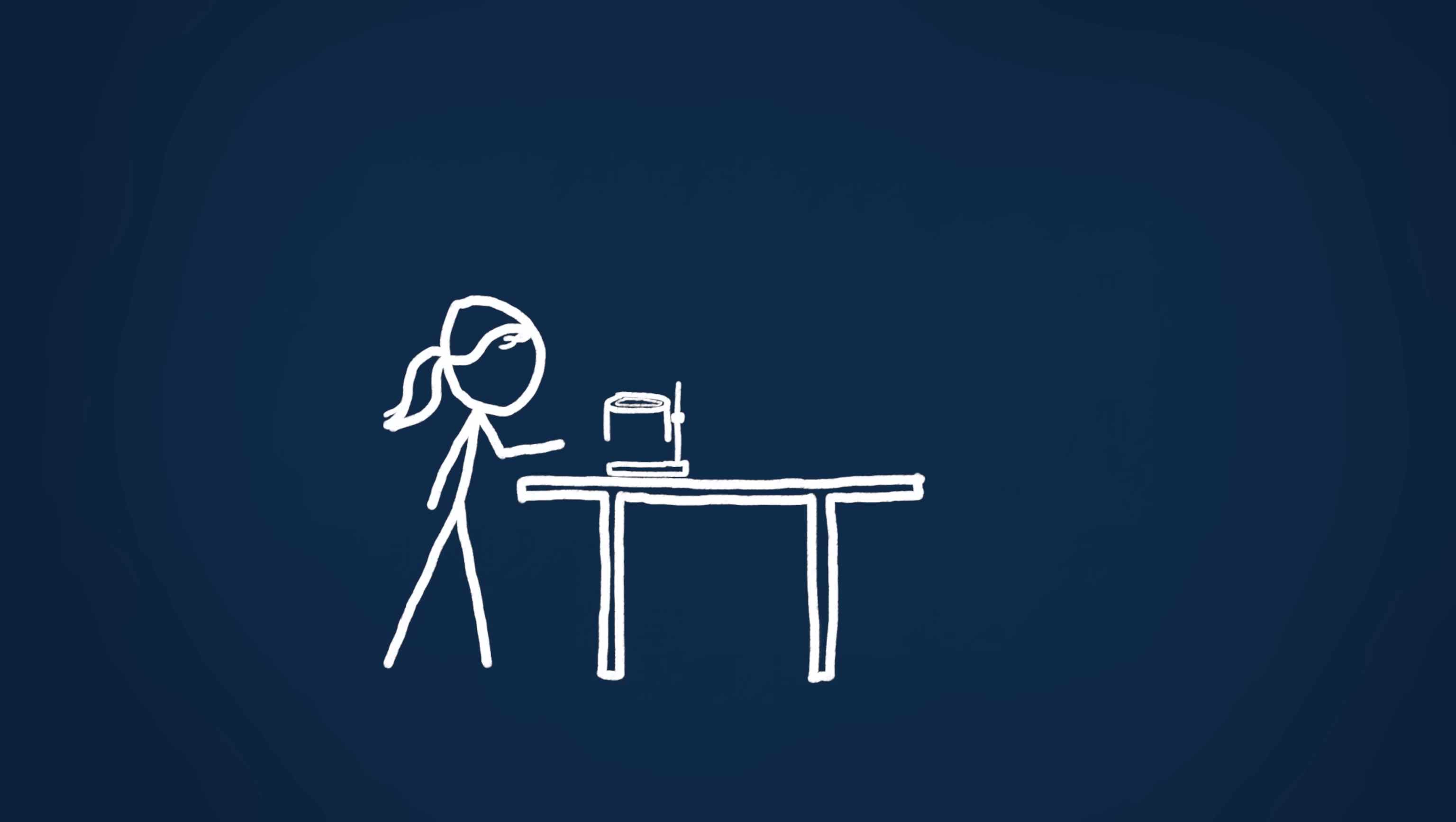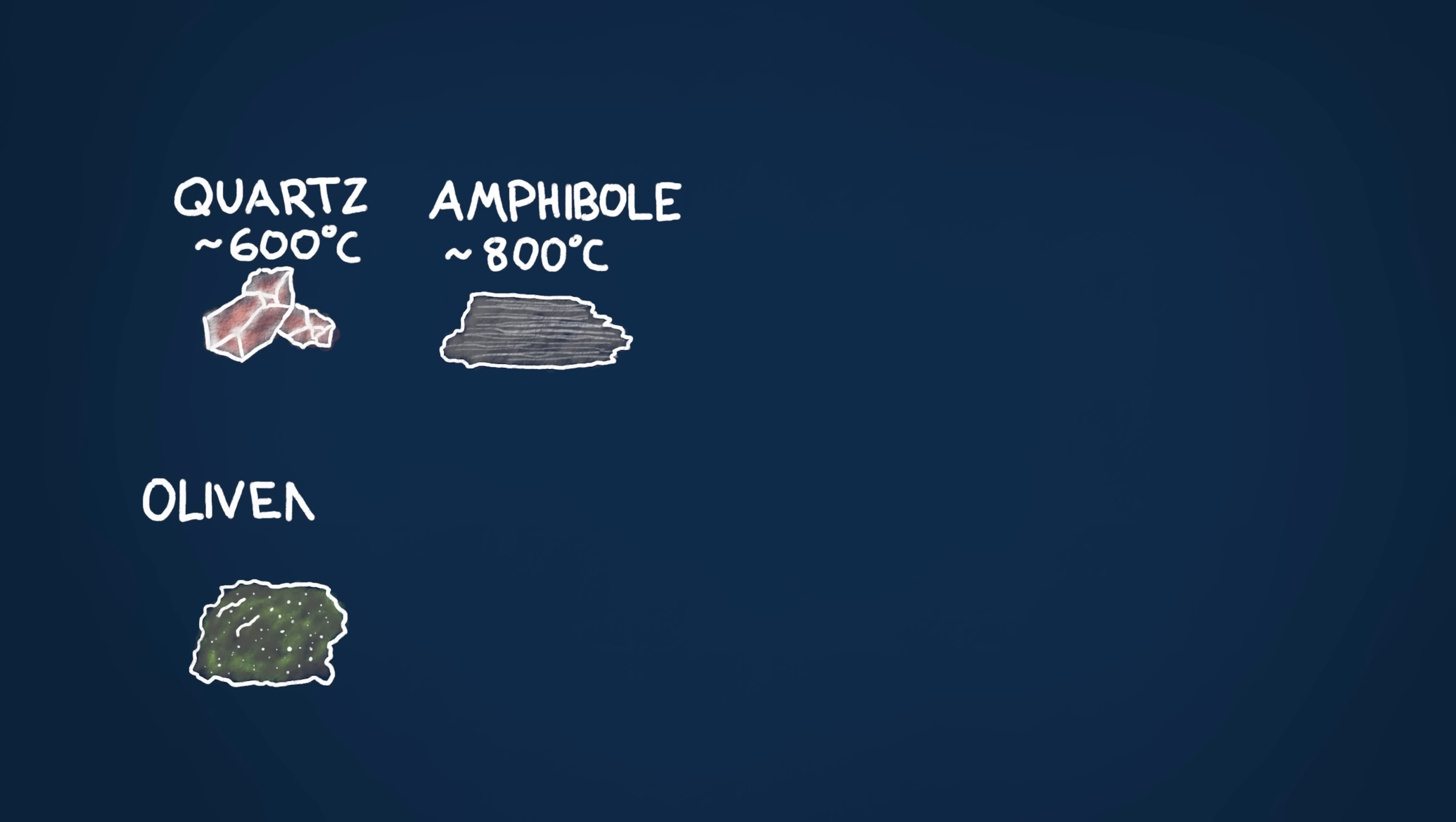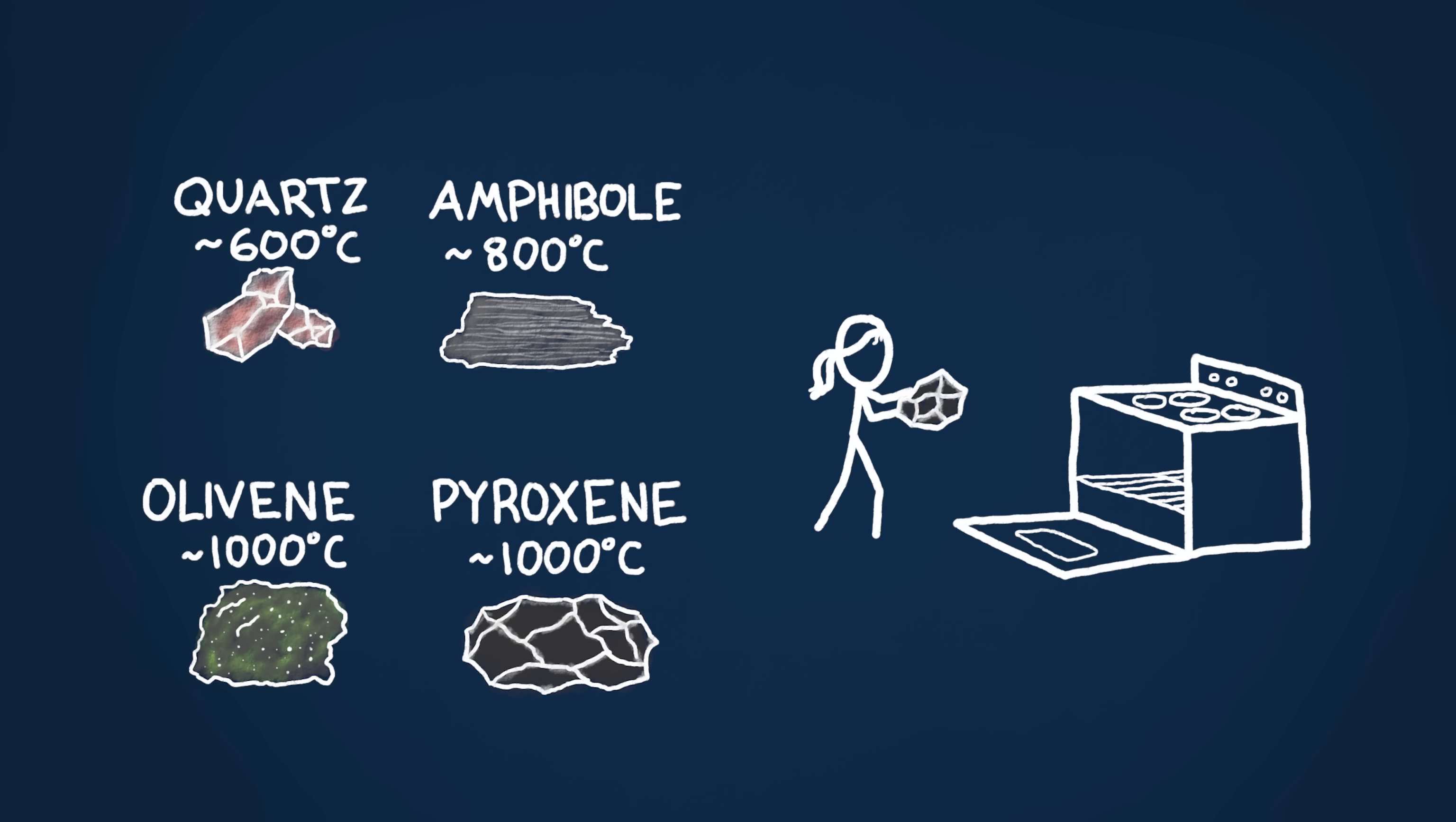It's actually pretty easy to make lava, at least in principle. The ingredients are just rocks and heat – lots of heat. Most rocks melt at temperatures between 800 and 1200 celsius, which is hotter than your oven.